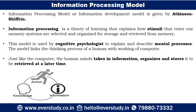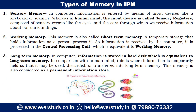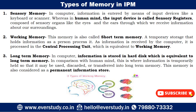The Information Processing Model has certain steps and certain types of memory that describe how information is processed. The first type is sensory memory. Sensory memory basically means getting the inputs.